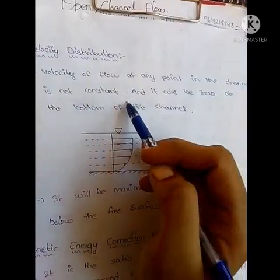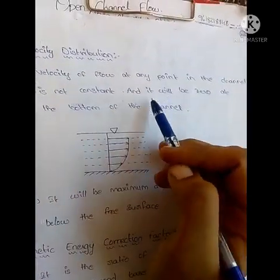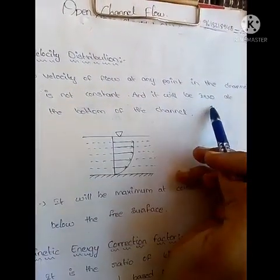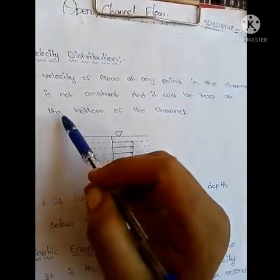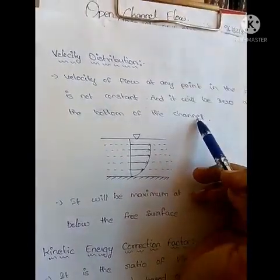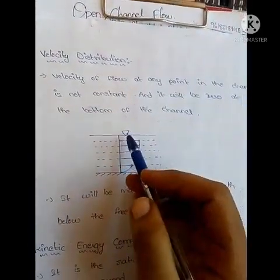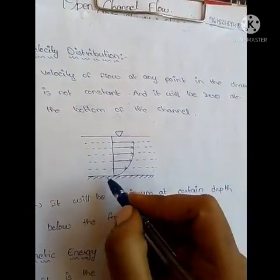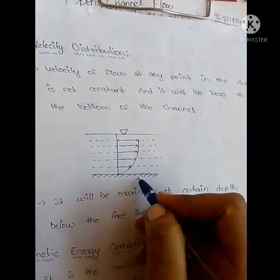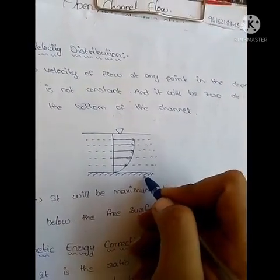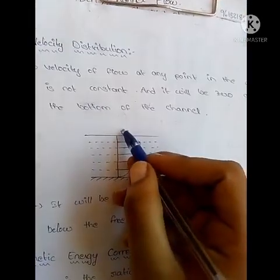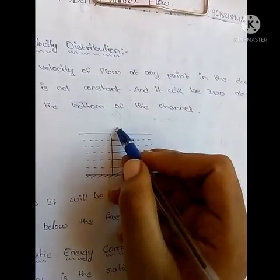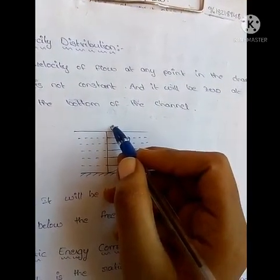The velocity will be zero at the bottom of the channel in an open channel. Consider the bottom of the channel and the free surface. At the bottom of the channel, the velocity is zero.